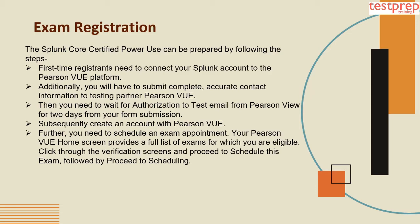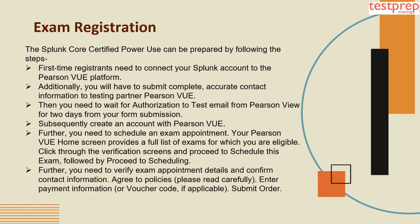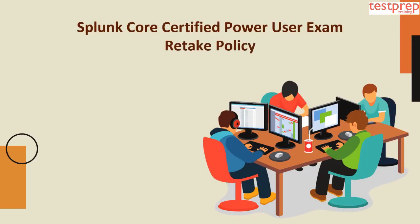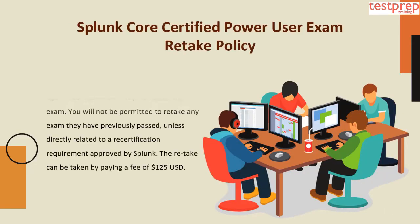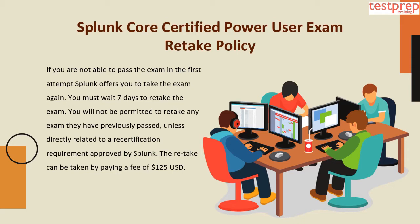Your Pearson VUE home screen provides a full list of exams for which you are eligible. Click through the verification screens and proceed to schedule the exam, then proceed to scheduling. Verify exam appointment details, confirm contact information, agree to policies — please read carefully — enter payment information or voucher code if applicable, submit the order, and lastly you will receive a registration confirmation email from Pearson VUE.